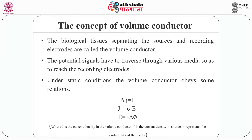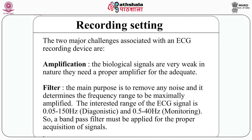Now we are going to talk about the concept of volume conductor. The biological tissue separating the sources and recording electrodes is called the volume conductor, and it plays a vital role in signal acquisition. The generated action potential creates an electrical field in the surrounding space, so the potential can also be detected at a distant location. The potential signals have to transfer through various media to reach the recording electrodes.